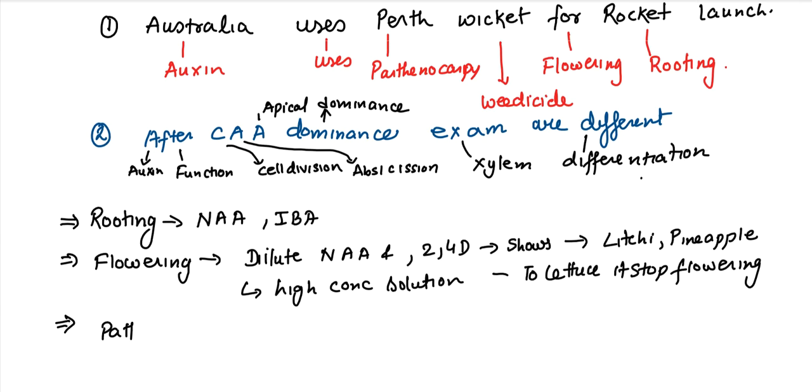Then question can be asked, which are the groups which can help in parthenocarpy? Then parthenocarpy, we should remember it is with the help of IAA and IBA, which help in parthenocarpy. Then we have the last use, which we have written is your weedicide.